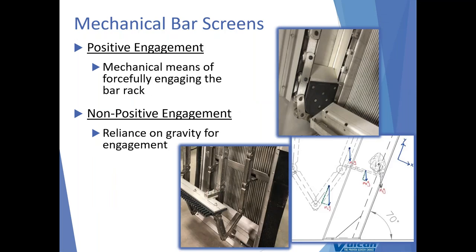When we say positive engagement, we're referring to a mechanical component at the bottom of the screen that forces the rake heads into the bar rack, not allowing disengagement to occur. When we say non-positive engagement, we're talking about reliance on gravity or a spring-loaded action that allows the rake heads to pull away from the bar rack. Looking at multiple rake screens specifically, the top picture shows the positive engagement with that forcible action at the bottom, and the lower picture shows a Physics 101 free body diagram illustrating the forces of gravity keeping those rake heads against the bar rack.